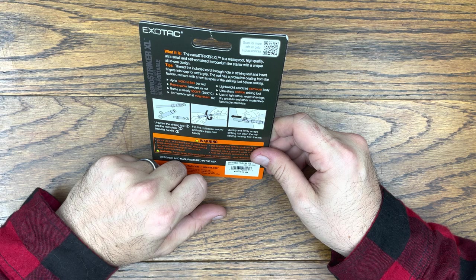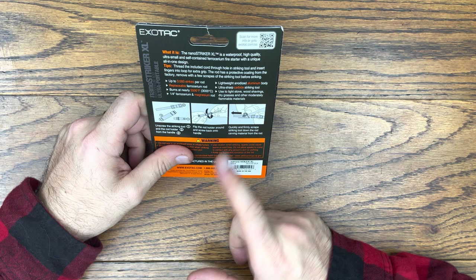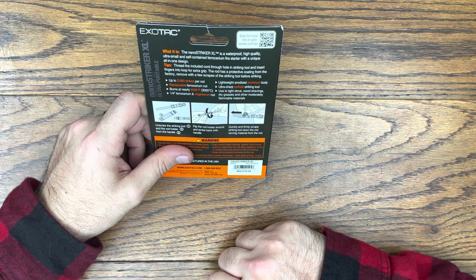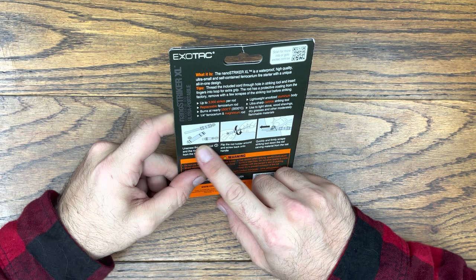It says ultra sharp carbide striking tool, which is nice. You get nice clean strikes every time, you don't have a rod that's all chewed up. And it says used to light stove, wood shavings, dried grasses, and other moderately flammable materials.